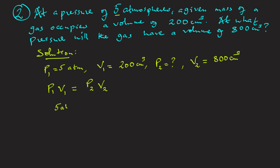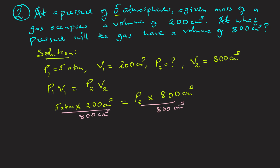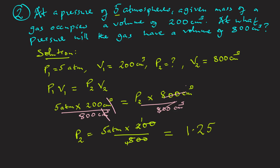So P1 is 5 atmospheres multiplied by V1, which is 200 cubic centimeters, equals P2 (which we don't know) times V2, which is 800 cubic centimeters. We divide both sides by 800 cubic centimeters. So P2 equals 5/4, which gives 1.25 atmospheres.